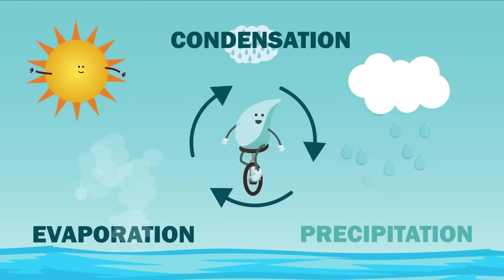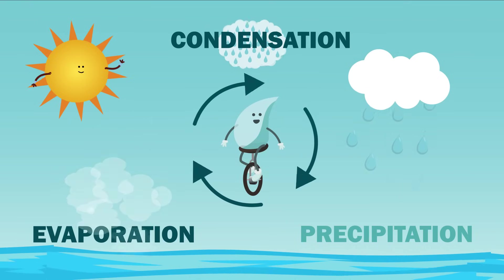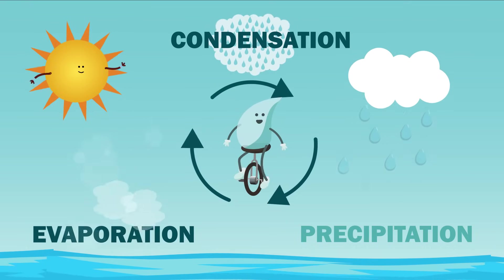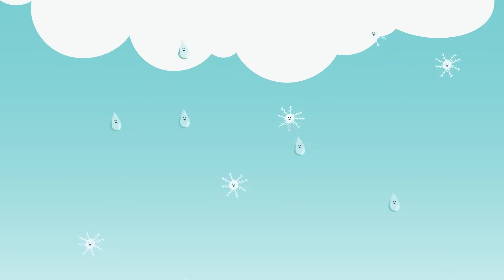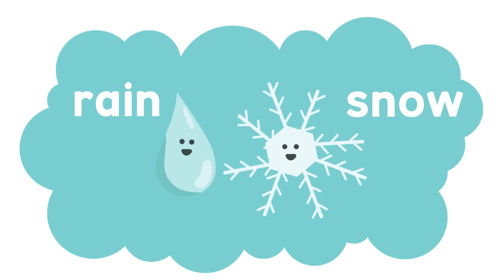Water cycle! Round and round and round and round. So, the clouds keep forming with more and more drops getting bigger and heavier — like it won't stop. But then what happens? Do you think you know? The drops start falling as rain or snow.